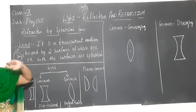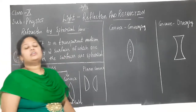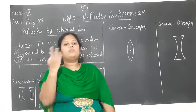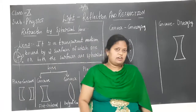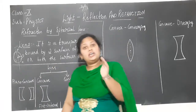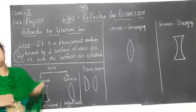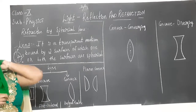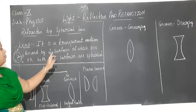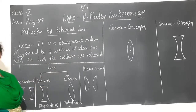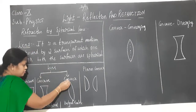A lens consists of two surfaces, of which one or both the surfaces are spherical — either one or both surfaces of the lens will be spherical. You will understand this last point better after studying the two types of lenses and their shapes. What is a lens? It is a transparent medium which has two surfaces. Now, when we consider lenses, they are of two types.